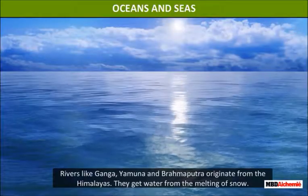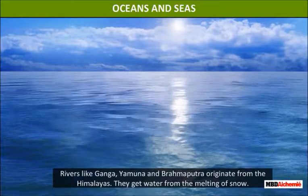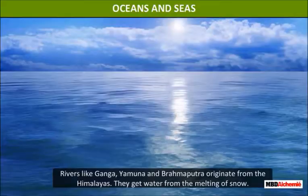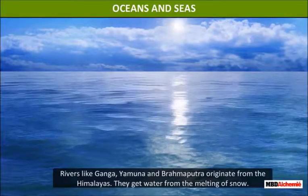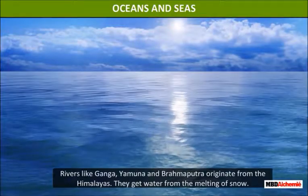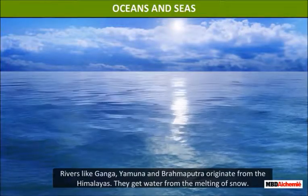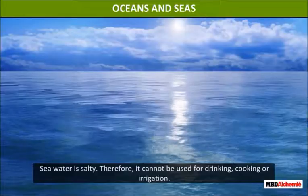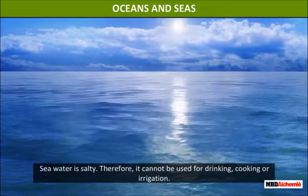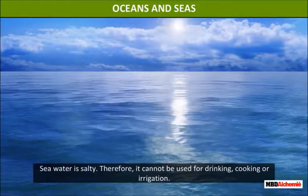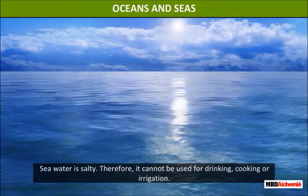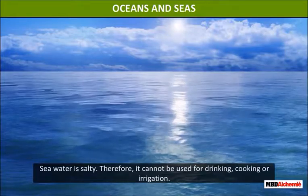Oceans and seas: oceans are the largest water bodies on earth. A sea is a large water body which is a part of an ocean. Sea water is salty, therefore it cannot be used for drinking, cooking, or irrigation.